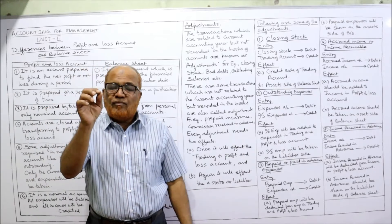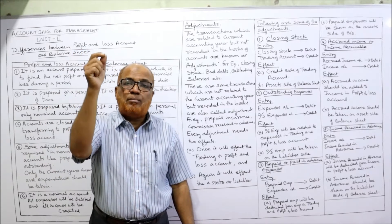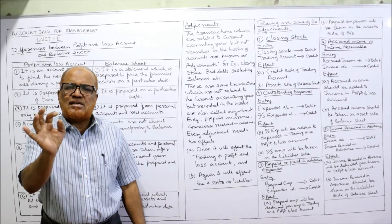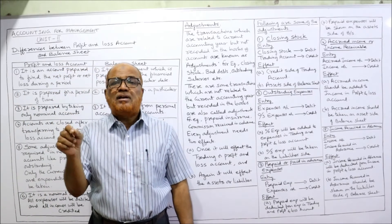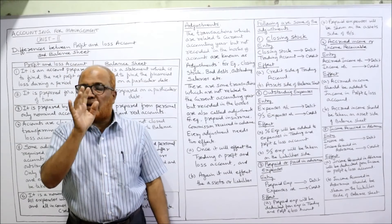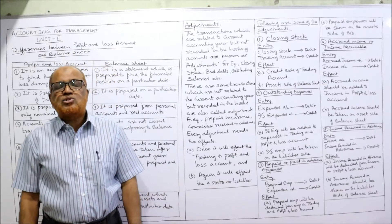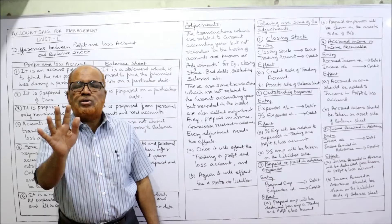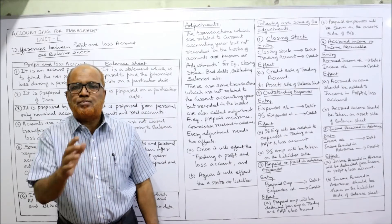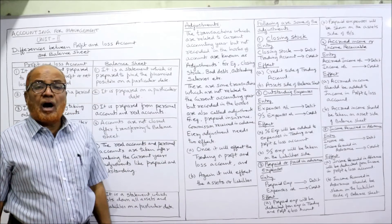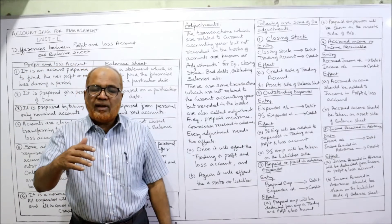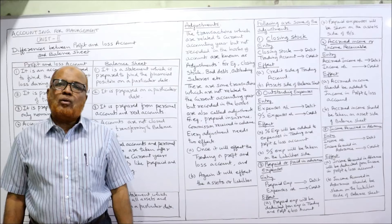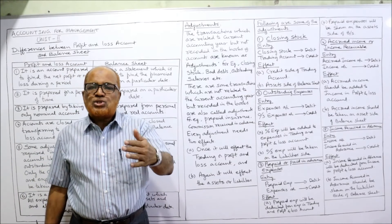However, sometimes closing stock is given in the trial balance itself. In most cases — 99% — closing stock will be given as an adjustment, but there is a possibility it appears in the trial balance. In that case, closing stock should be taken only once on the asset side of the balance sheet — do not take closing stock in the trading account. Remember this important point.